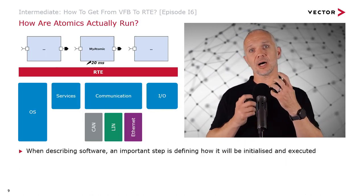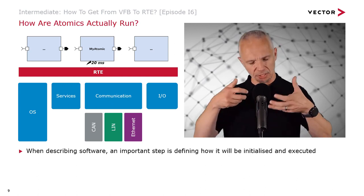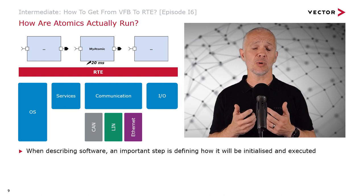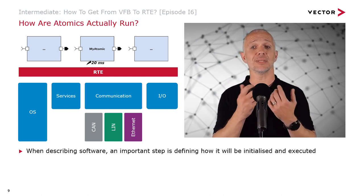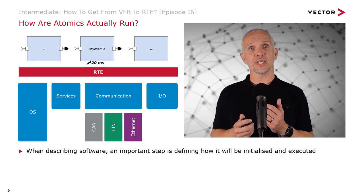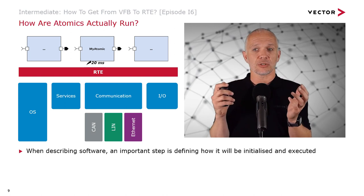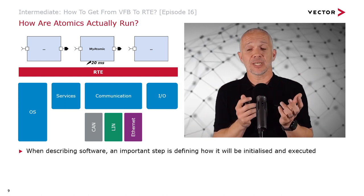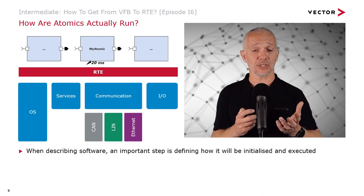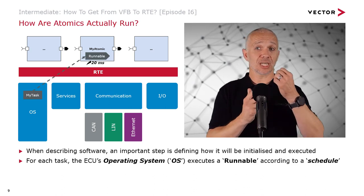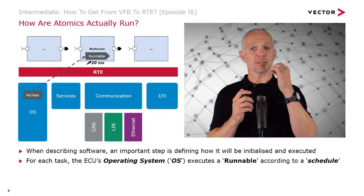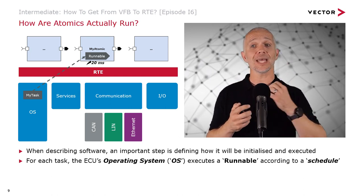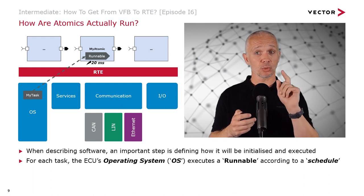Let's think about some other things about what happens inside an ECU — specifically, how atomics are actually run. If I want my atomic to run every 20 milliseconds, then a really important step when describing software is describing how it will be initialized and how it will be executed. For each task, the ECU's operating system or OS will execute a runnable according to a schedule.